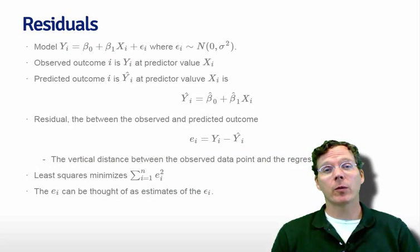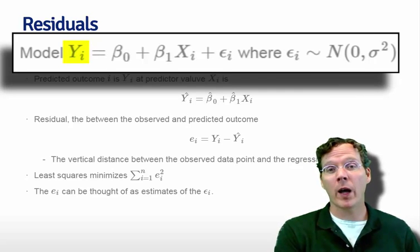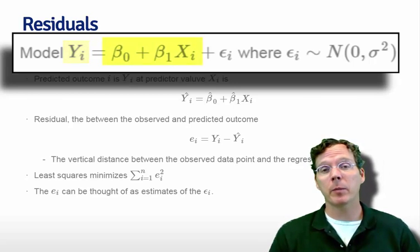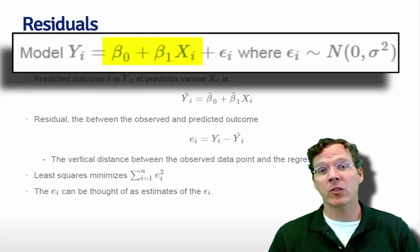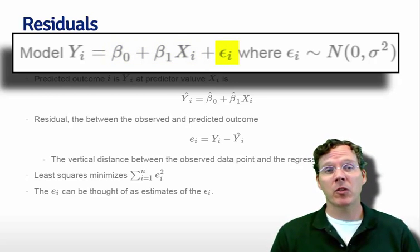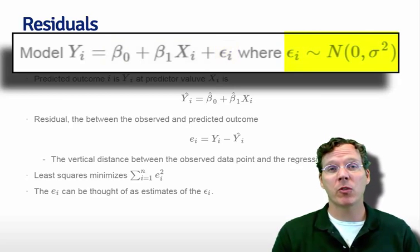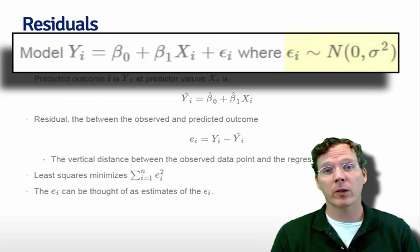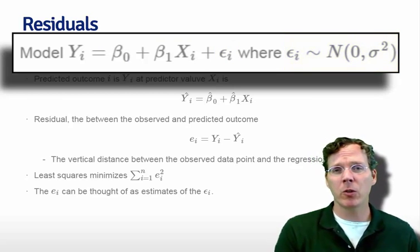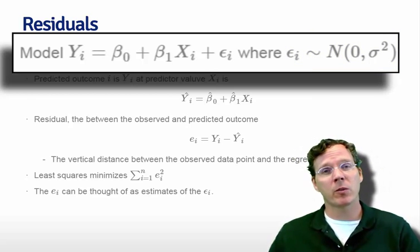Let's remind ourselves of the model that we're considering. Our outcome, in our example which would be price, is Yi, which we're assuming is a line β0 + β1Xi, where Xi in this case is mass in our example. We're adding on some Gaussian error εi, which we're assuming to be normally distributed with a mean of zero and a variance of σ². We haven't explicitly used this normal assumption yet, and that will be coming later on in some subsequent lectures.